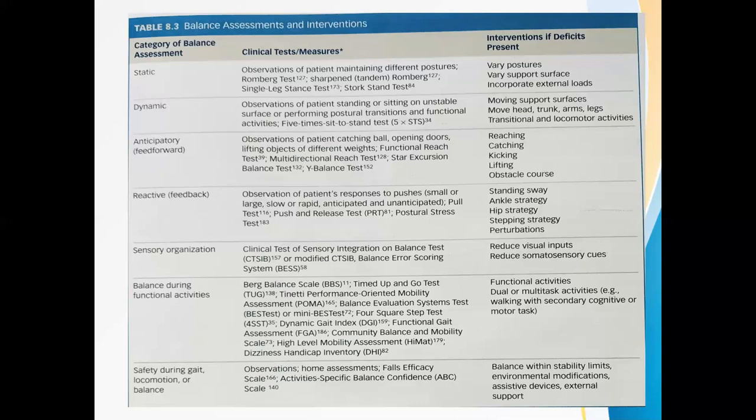Then is sensory organization, which involves the CTSIB — Clinical Test of Sensory Integration and Balance — and the Balance Error Scoring System (BESS). The BESS is a clinical test of postural stability that requires an individual to assume three different stance positions — double leg, single leg, and tandem — while standing on a firm surface and then standing on a piece of foam with eyes closed, for a total of six 20-second trials. The tester observes for six types of errors in performance — such as opening the eyes, taking steps, or stumbling and falling — and performance is scored by adding one error point for each error committed. The BESS has moderate to good inter-rater reliability and is useful for identifying balance deficits.